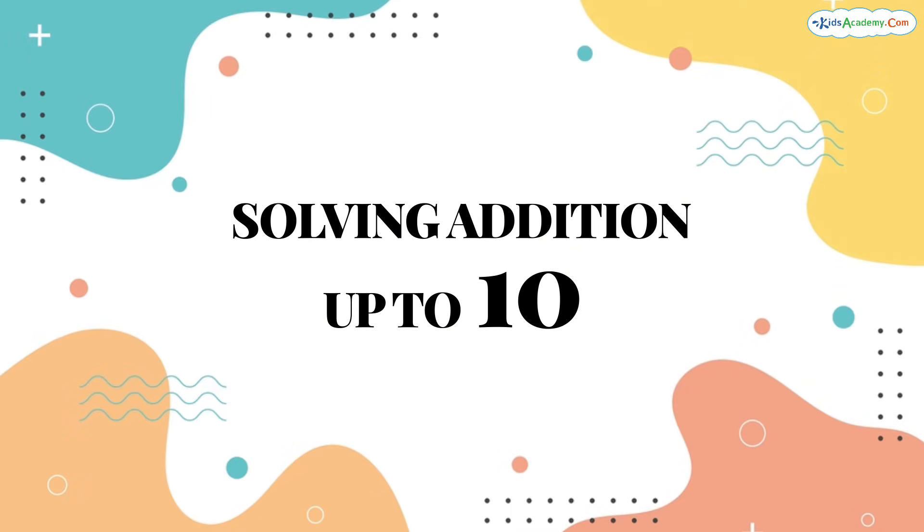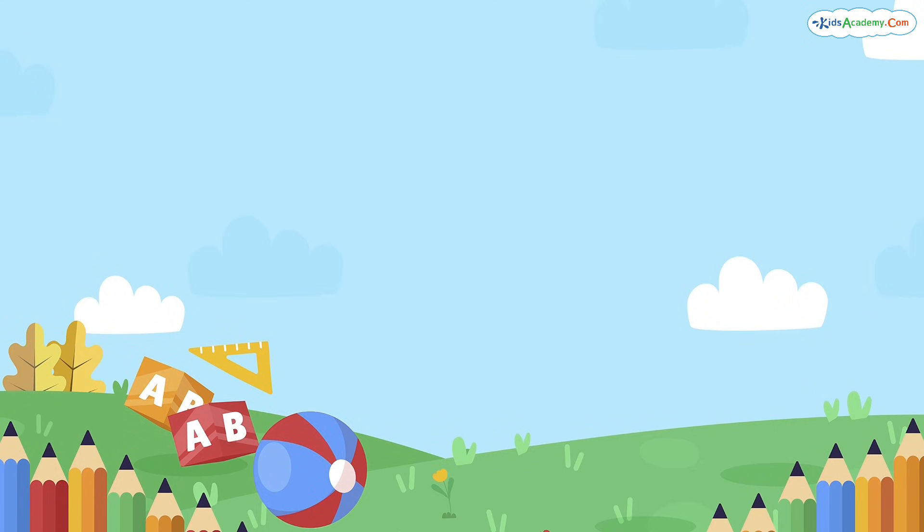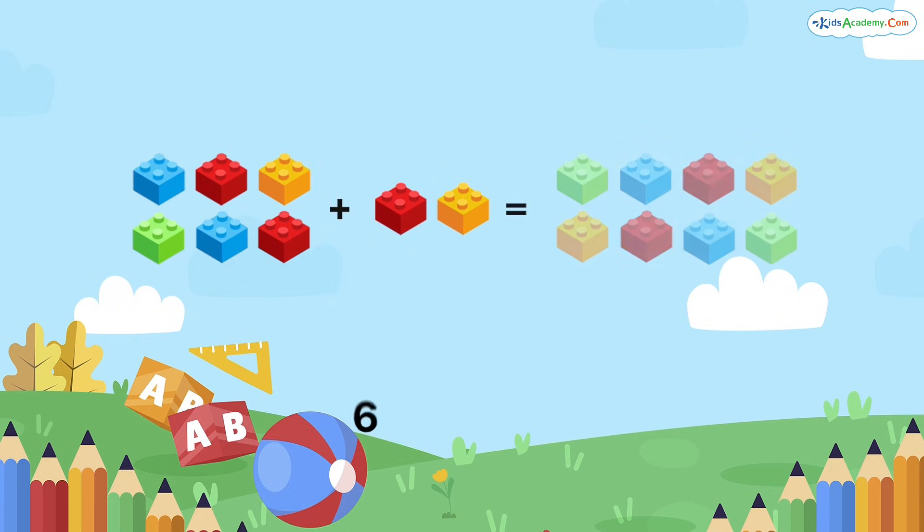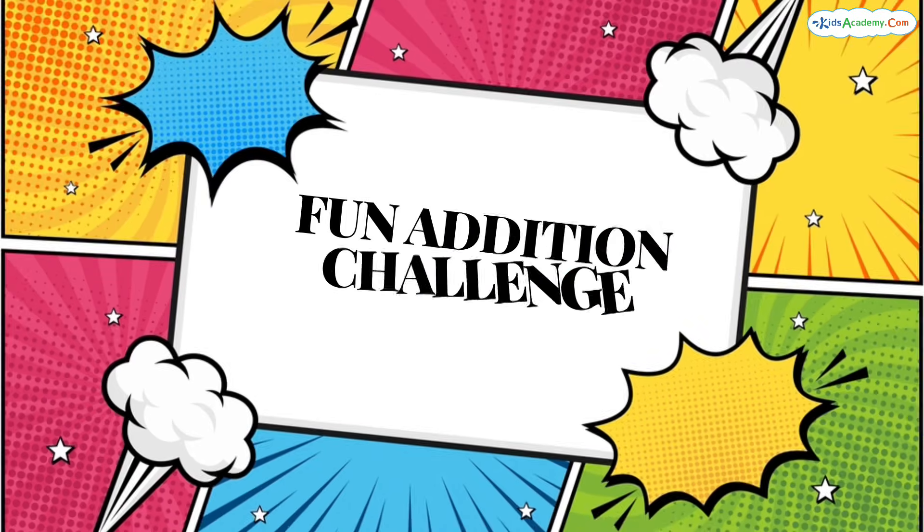Now, let's practice adding numbers all the way up to 10. Ready? What is 6 plus 2? Let's figure it out together. First, count six objects, then add two more. How many do we have now? That's right, 6 plus 2 equals 8. Fantastic! You're doing such a great job.